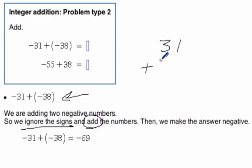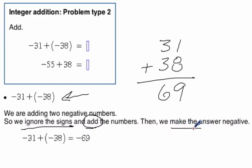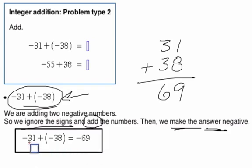31 plus 38, that makes 69. Then we have to make the answer the same sign as both of the original numbers. So that means we have to make it negative. So the answer to this one, negative 31 plus negative 38, is negative 69.